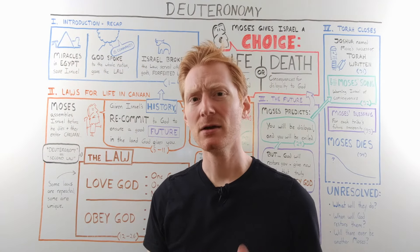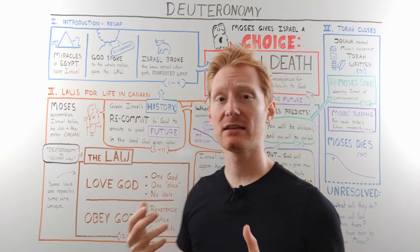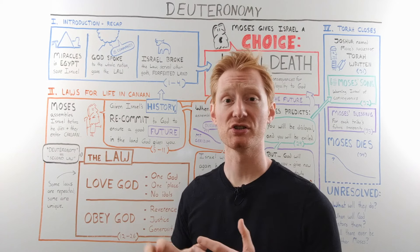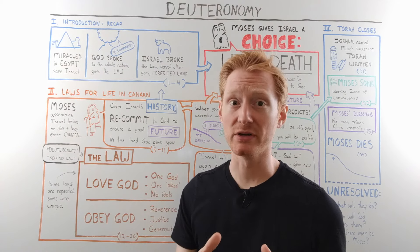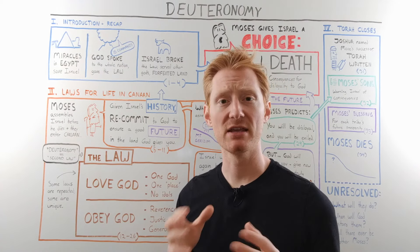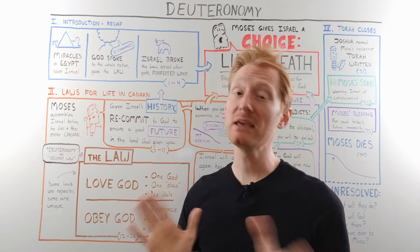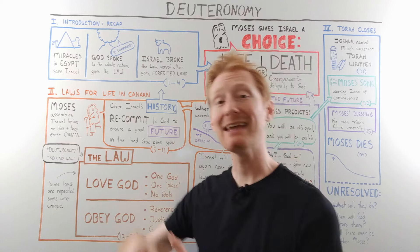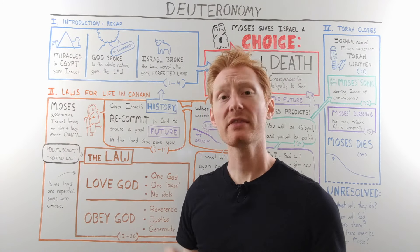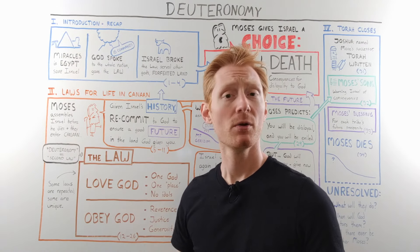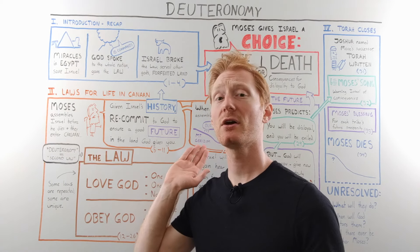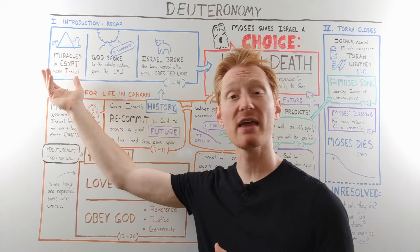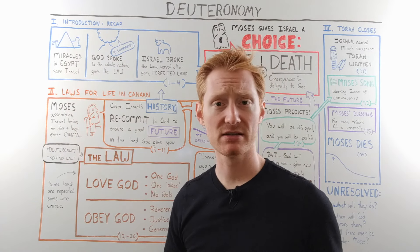Moses reminds the people: not only did you see all these miracles, but you also heard the voice of God. And yet, right after they hear God give the 10 commandments — the basic laws for being in this new relationship where God is Israel's provider and protector — they immediately break the first couple of commandments by creating a different god, an idol, to worship. And later in Numbers, the people choose to go back to Egypt rather than trust God to bring them into the promised land.